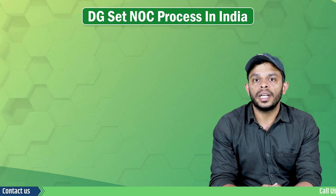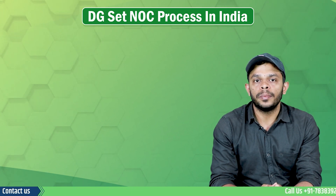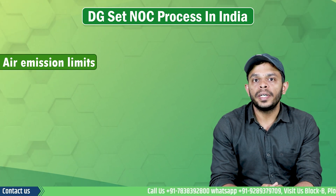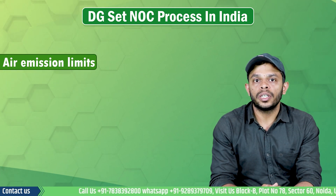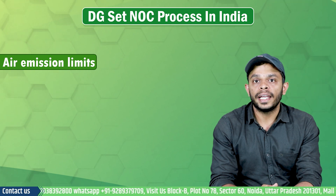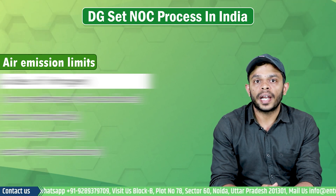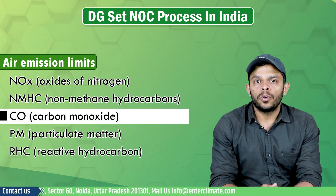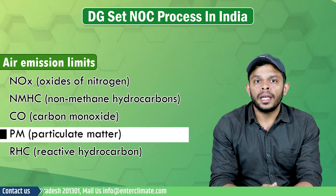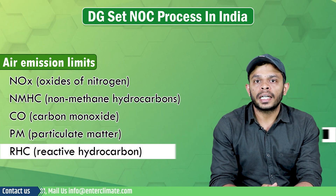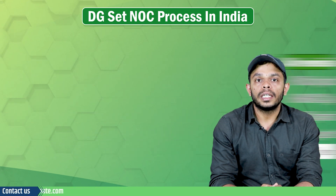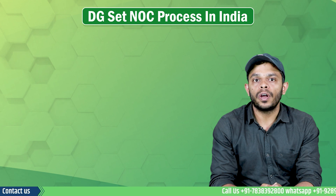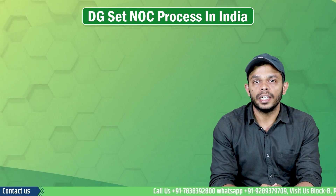To ensure that your emission levels are under the prescribed limits, let's understand the air emission and noise emission criteria. The air emission limits specify the permitted pollutant levels in the air emission, including pollutants like oxides of nitrogen, non-methane hydrocarbons, carbon monoxide, particulate matter, and reactive hard carbons. The concentration limits for these pollutants have been specified for all engines and fuel types accordingly.